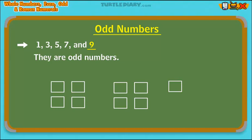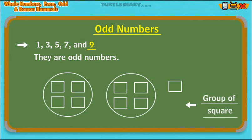In this example, nine squares cannot be put evenly into two groups. We have two groups with four squares each, and there is another square that is left over.